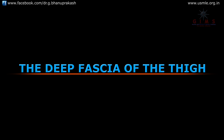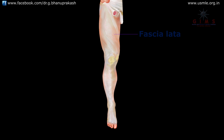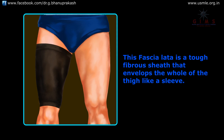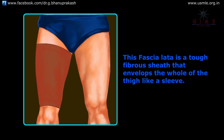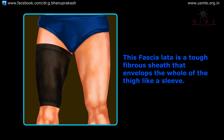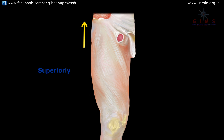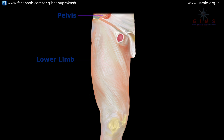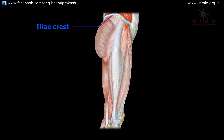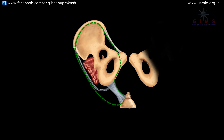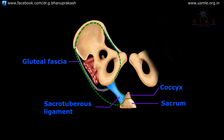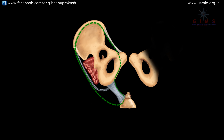Let us discuss the deep fascia of the thigh, also called the fascia lata. This is a tough fibrous sheet that envelops the whole of the thigh like a sleeve. Superiorly, it is attached to a boundary line between the lower limb and the pelvis. Anteriorly it is attached to the inguinal ligament, laterally to the iliac crest, and posteriorly through the gluteal fascia it gives attachment to the sacrum, coccyx, and the sacrotuberous ligament.